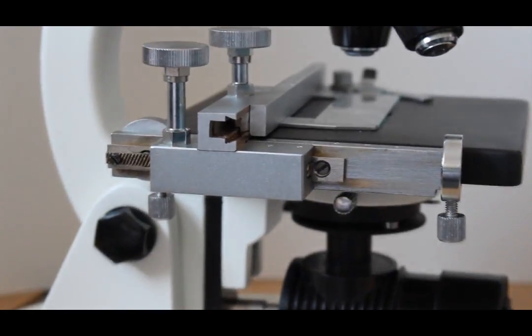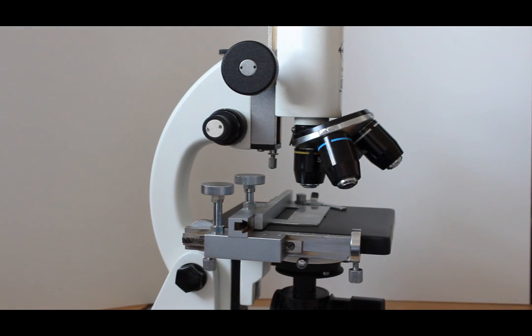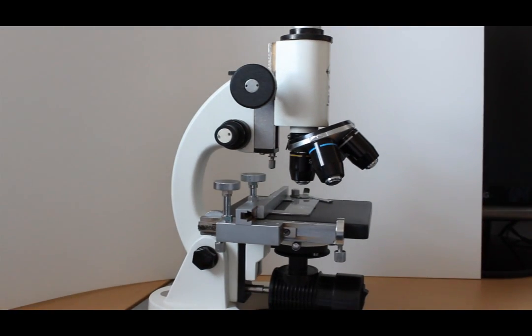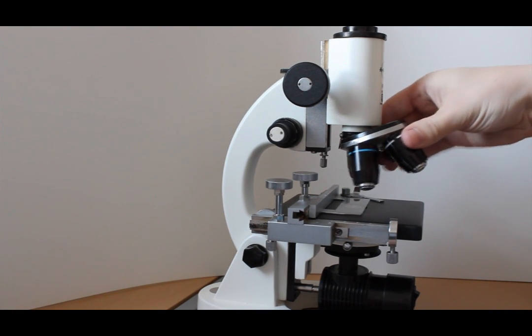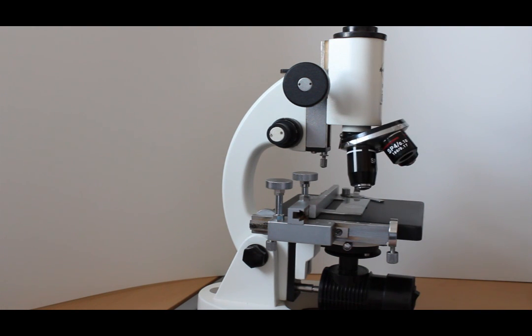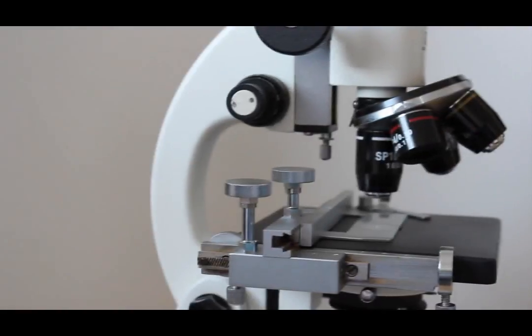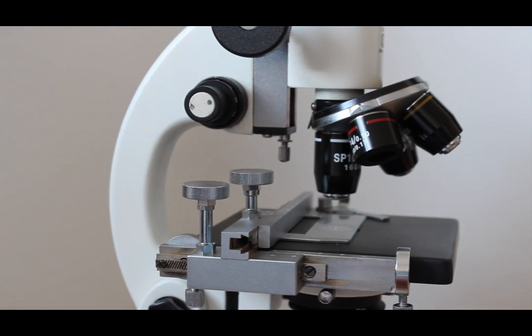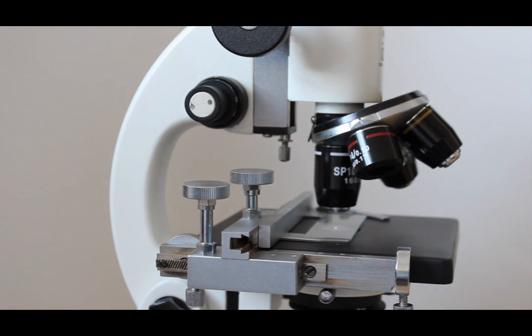And I think that concludes the majority of how to use a compound microscope. But one last thing though. When you are trying to find your specimen, you want to go to the highest magnification, which is the oil immersion objective. You never want to touch the actual objective right to the glass. So what you're going to use is an immersion oil. So you literally just want to have one drop of immersion oil.